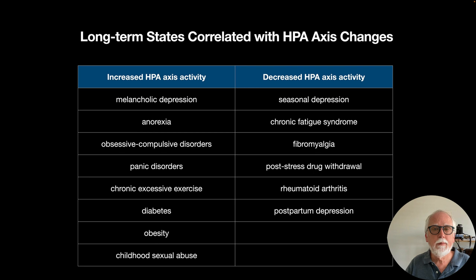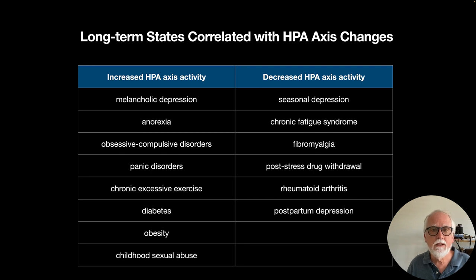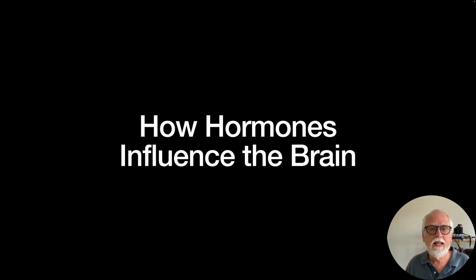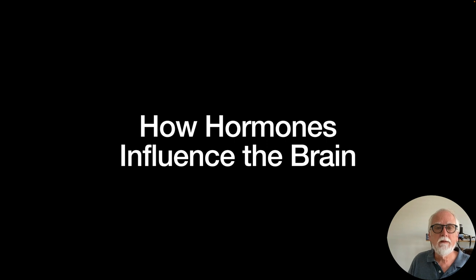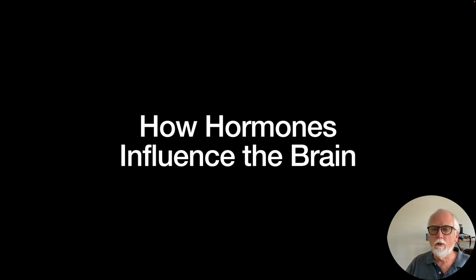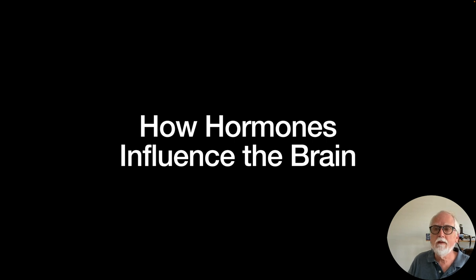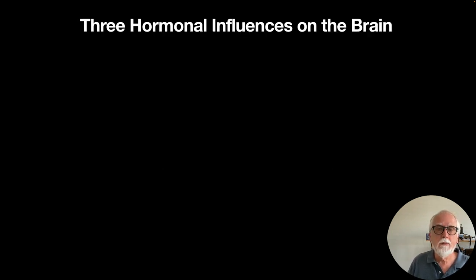Now let's talk about how hormones actually influence the brain. So far we've discussed how the brain influences hormones, but hormones also influence the brain. There are three things to pay attention to: first, hormones must pass through the blood-brain barrier; second, once through, specific neurons must have the right receptor; and third, once the hormone binds with the neuron's membrane, it must have some influence on the neuron.